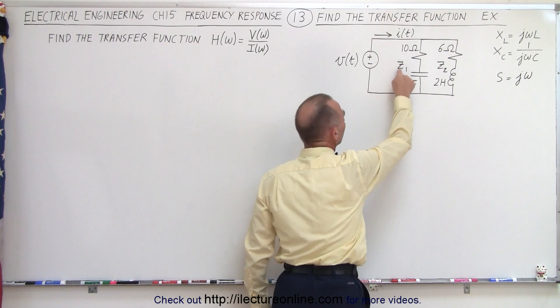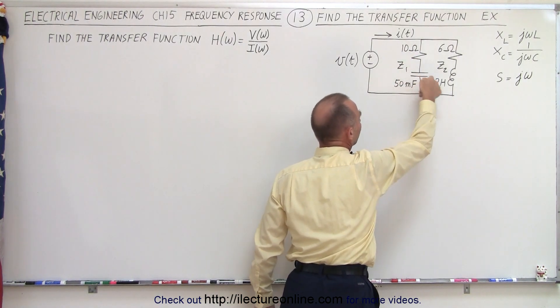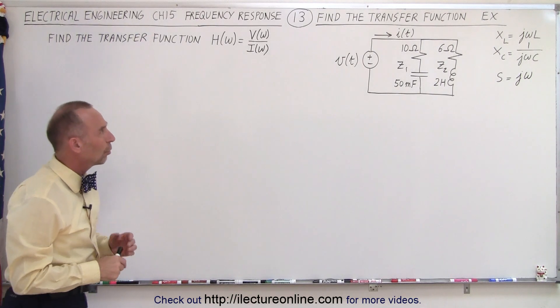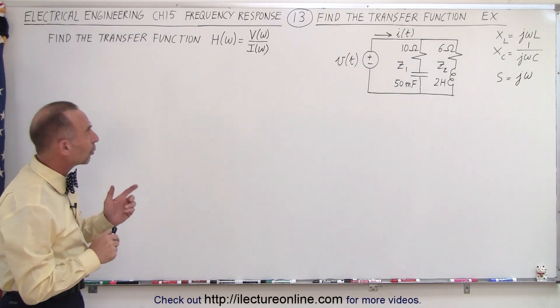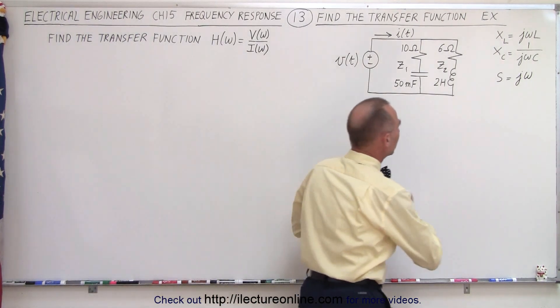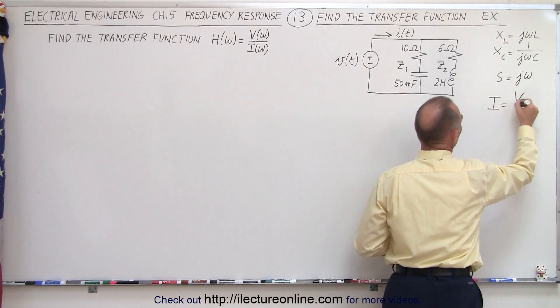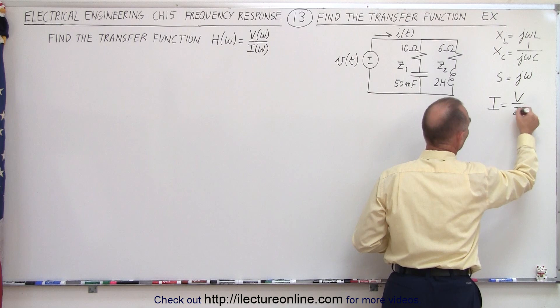We have impedance 1 through this line here and impedance 2 to that line right there. And so, keeping in mind Ohm's Law, we could do the following. We know that the current through any circuit is equal to the ratio of the voltage divided by the resistance, or in this case, the impedance.